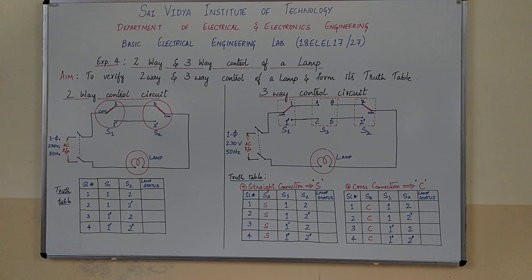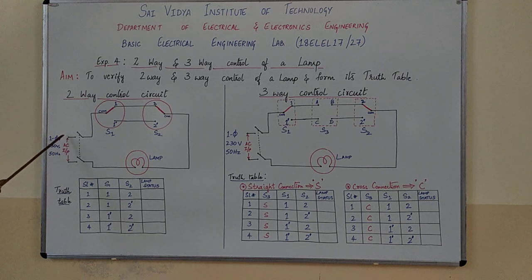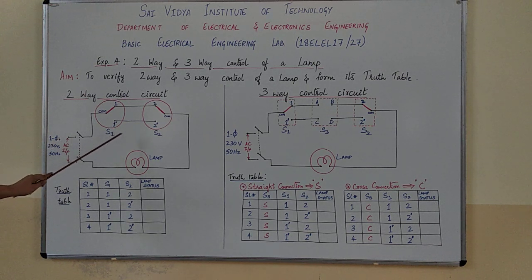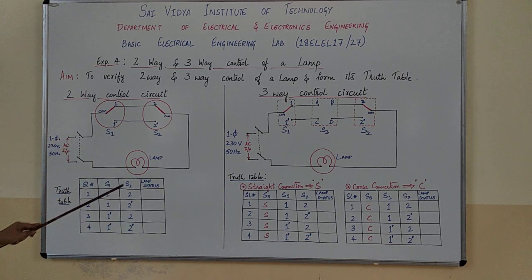The two-way control circuit consists of an input AC supply, two switches S1 and S2, and a lamp.